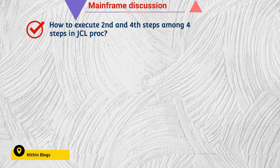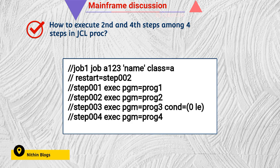The first question is: how to execute the second and fourth steps among four steps in a JCL? You can see the screenshot — there is a job card on the first line. In the job card, we are going to restart at step two, skipping step one. In step three, we are using the COND parameter.